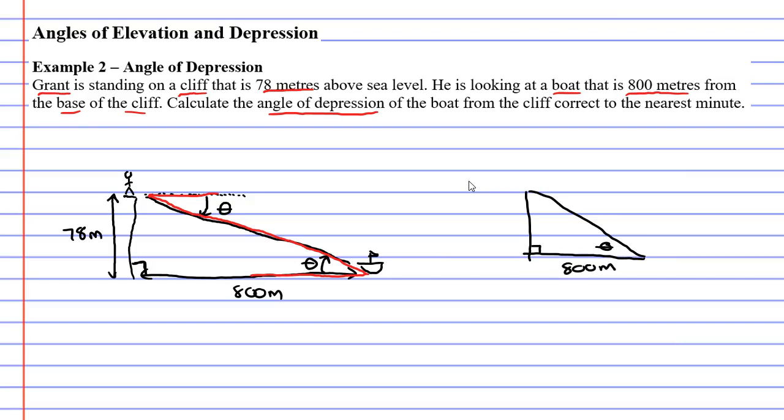800 meters and 78 meters. So technically we're finding the angle of elevation, but it's okay because it's going to be the same as the angle of depression. Okay, so let's label our triangle. 78 meters is our opposite, our